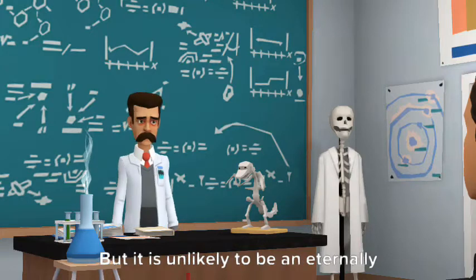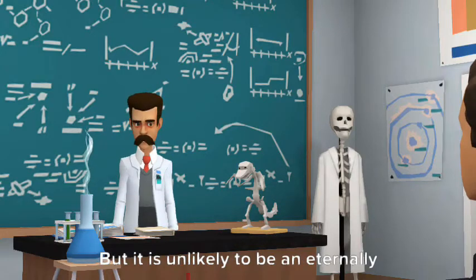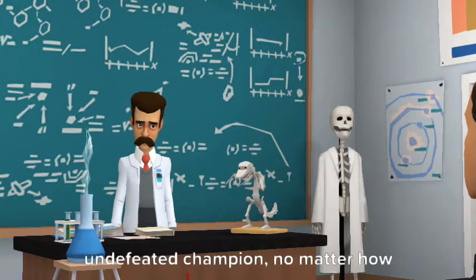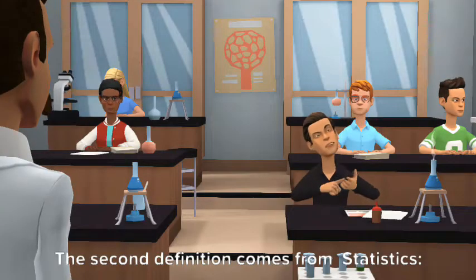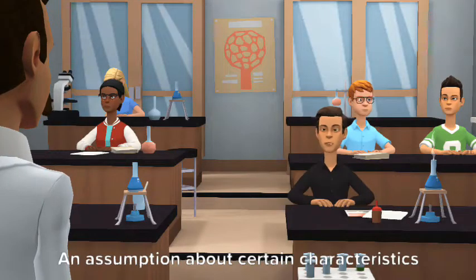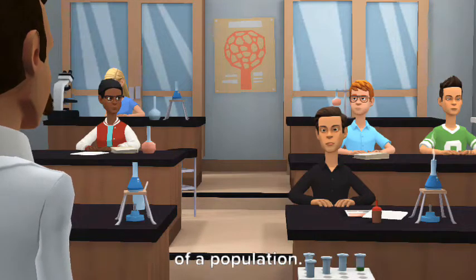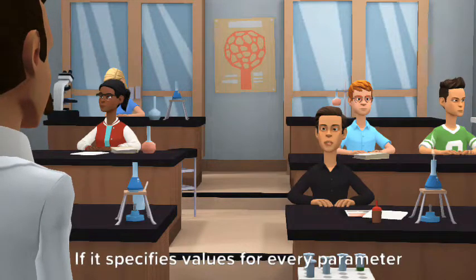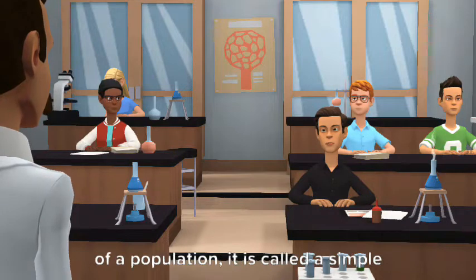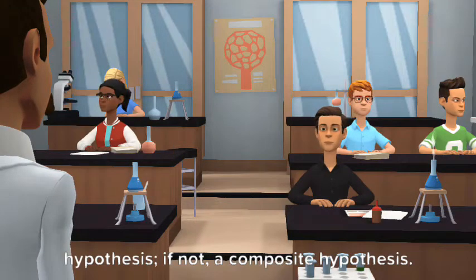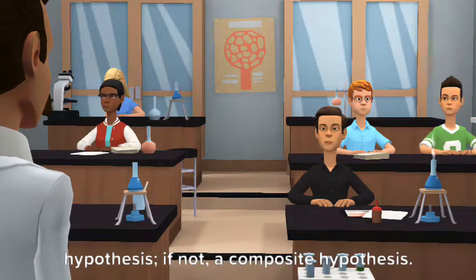But it is unlikely to be an eternally undefeated champion, no matter how strong. The second definition comes from statistics, an assumption about certain characteristics of a population. If it specifies values for every parameter of a population, it's called a simple hypothesis. If not, a composite hypothesis.